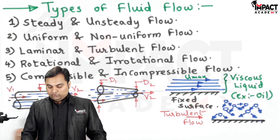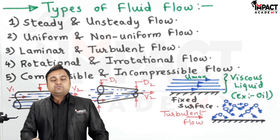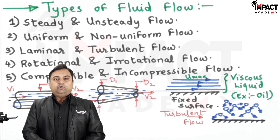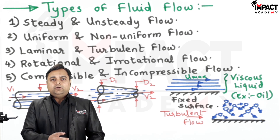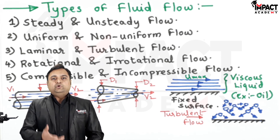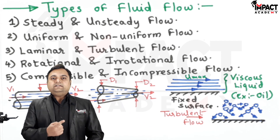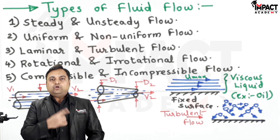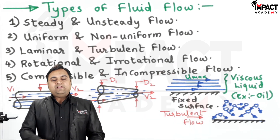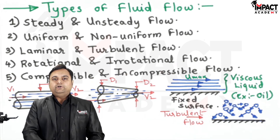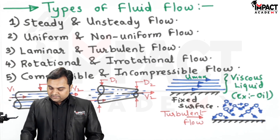Then rotational and irrotational flow. Rotational flow means while flowing, the fluid also rotates about an axis. It is seen in devices like a rotameter, which is used to measure the flow rate or discharge of the flowing fluid — the fluid while flowing also rotates. In irrotational flow, the fluid does not rotate about its own axis.